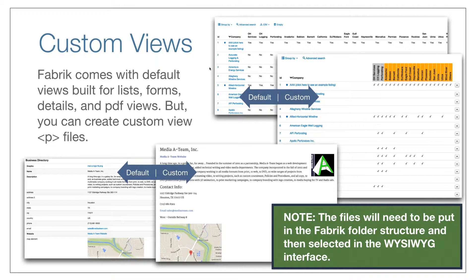When you create custom templates, you will need to put them in the Fabric folder structure so there's a place where they go per the type of view they are, and then you'll be able to select them in the WYSIWYG interface. You almost always are going to create custom views when you're going to use PDF — we have PDF views. You can use the default, but typically you'll write a custom view for your PDF. The cool thing is I can use PHP to do all kinds of if statements, go grab data off other tables to incorporate into my PDF, whatever I want to do.